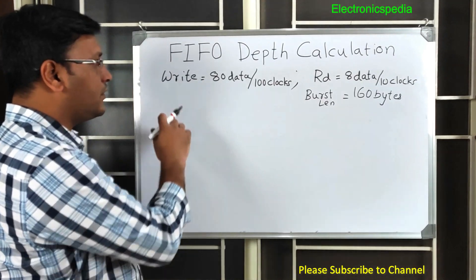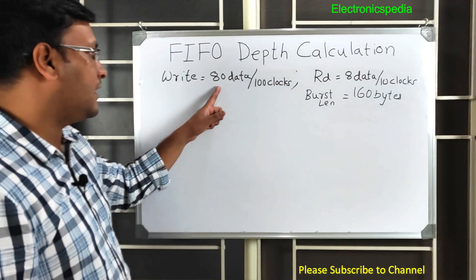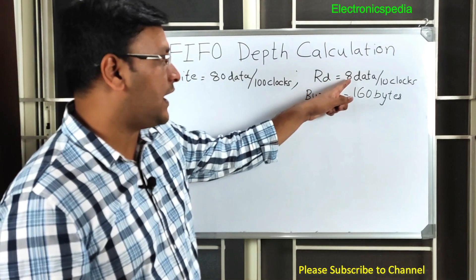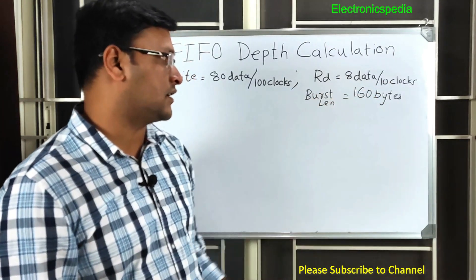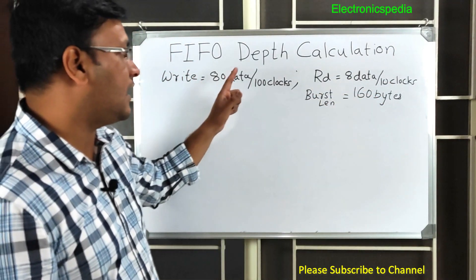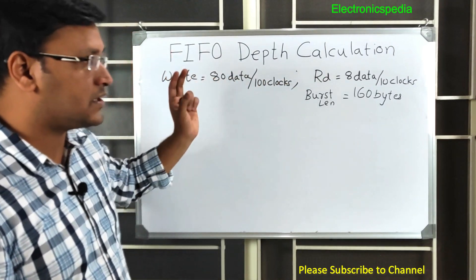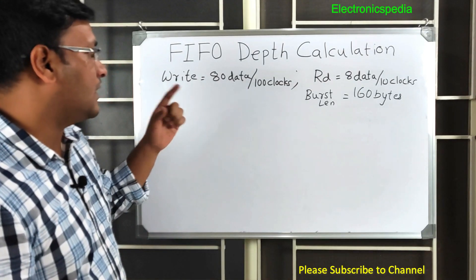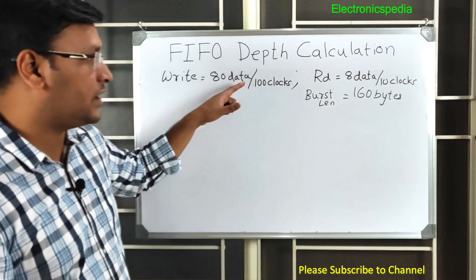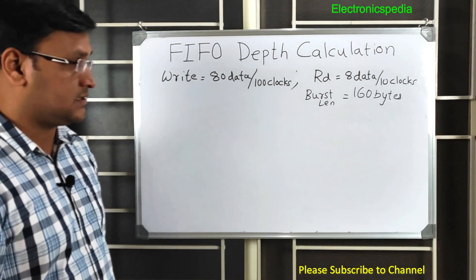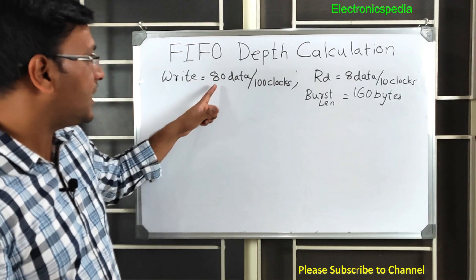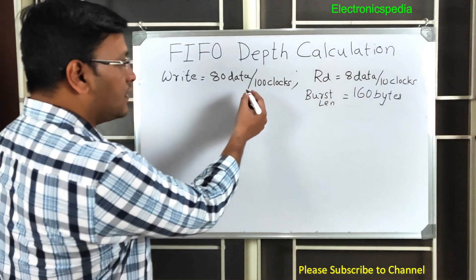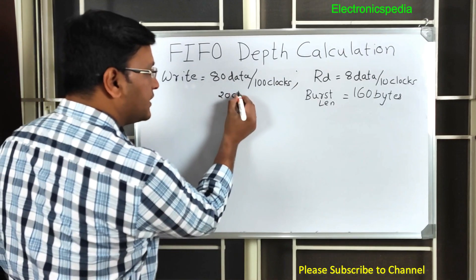Let's take this example. On the write side, we are writing 80 bytes of data per 100 clock cycles, and on the read side we are reading 8 bytes of data per 10 clock cycles. If you observe, the write side and read side have the same ratio. We want to transfer 100 bytes of data — so do we need a FIFO? The answer is yes, because we are considering a randomization of 20 clock cycles.